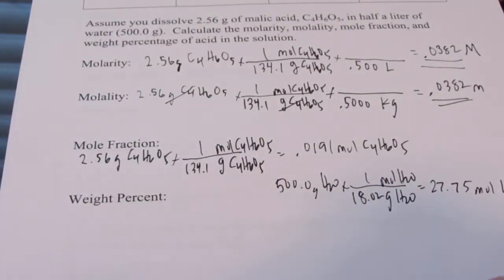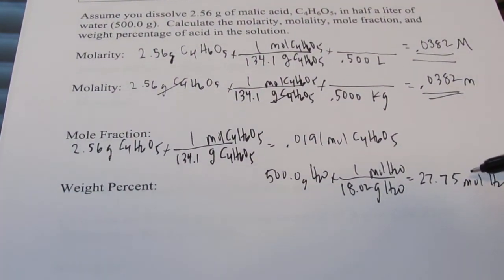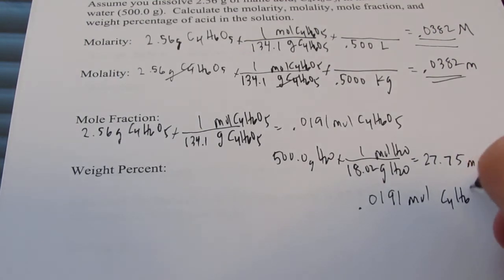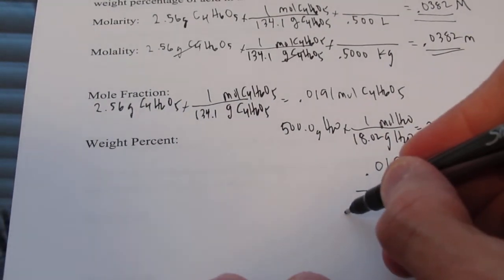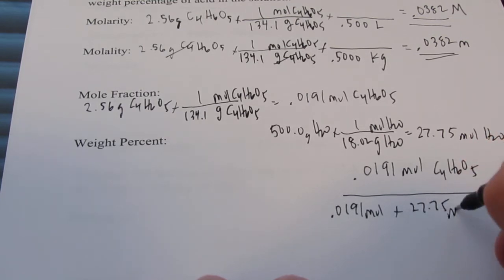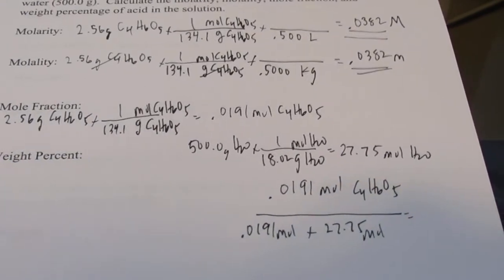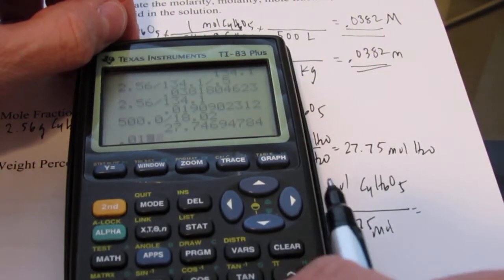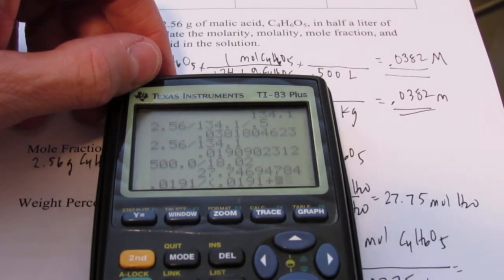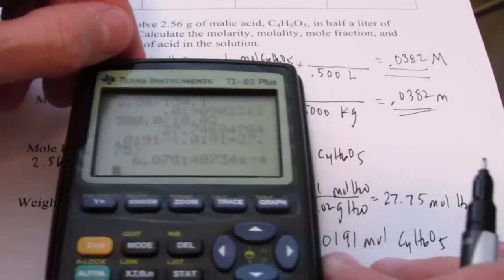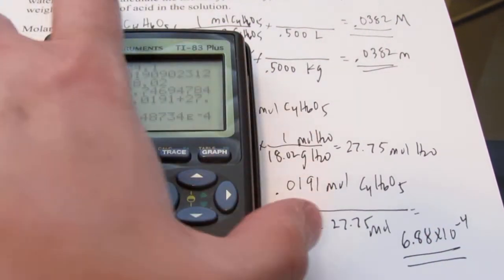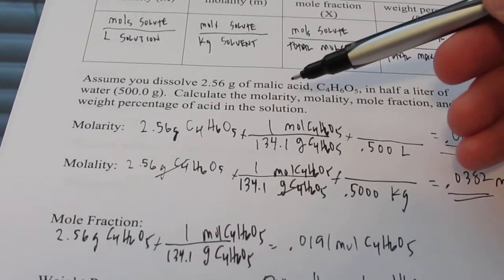Now the mole fraction of my solute, kiddos, will be the moles of my solute divided by the total number of moles. So let's go ahead and do that right over here. 0.0191 moles of solute, C4H6O5, divided by the total number of moles, which of course is 0.0191 moles of my solute, plus my 27.75 moles of my water. And we'll leave that as a decimal. So let's plug that in. 0.0191 divided by, we'll use my parentheses key, 0.0191 plus 27.75, close off my parentheses, and I get a mole fraction of 6.88 times 10 to the negative 4th. And that would be the mole fraction of my solute, which of course was my malic acid.